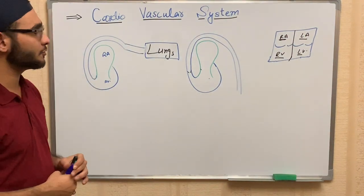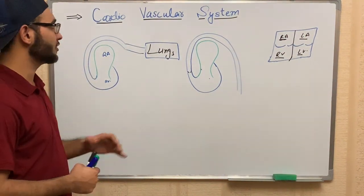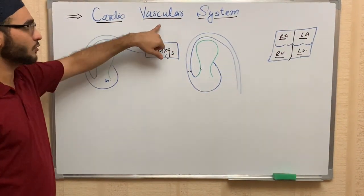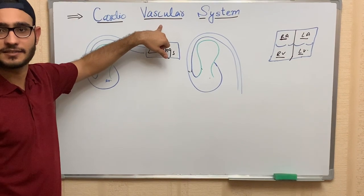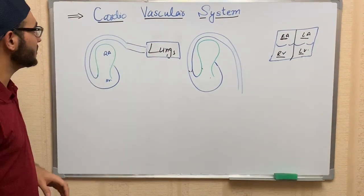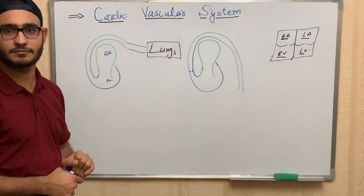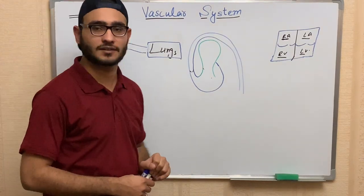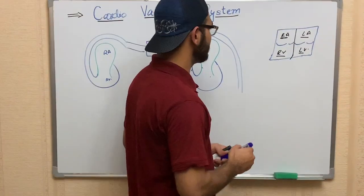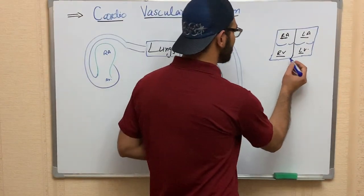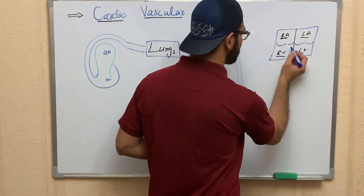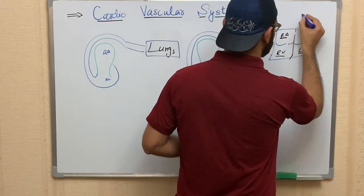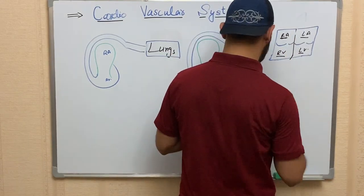Today we are going to discuss the cardiovascular system. 'Cardio' means heart and 'vascular' means blood vessel, so this system consists of the heart and blood vessels. The heart has a left side and a right side, separated by a wall called the septum.